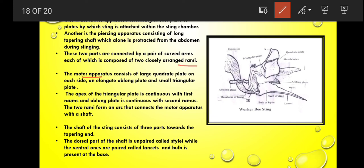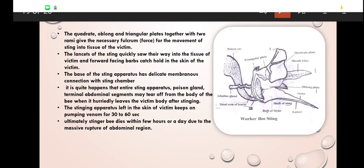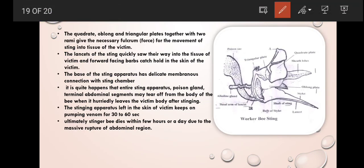The motor apparatus consist of quadrate plate, oblong plate, and triangular plate. The apex of triangular plate is connected with the first ramus and apex of oblong plate is continuous with the second ramus. These two rami are connected with the shaft. The shaft of the sting consists of three parts: one is the dorsal unpaired part is called stylet. The ventral paired part is called lancet. The bulb is present at the base of the shaft. The quadrate plate, oblong plate, triangular plate, and two rami, totally the motor apparatus give the necessary force for the movement of sting into tissue of the victim.